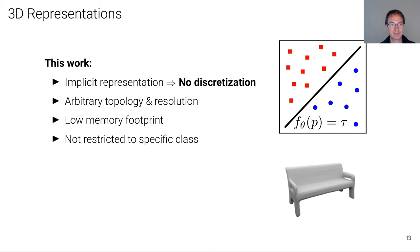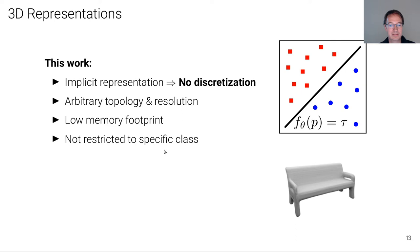In this work, we were wondering: is it actually really necessary to discretize space, as in all three aforementioned representations? What we do instead of using an explicit output representation is propose an implicit output representation that does not require any discretization. It can therefore model arbitrary topology and, in theory, an arbitrary resolution. It has a comparably low memory footprint and is not restricted to specific classes or categories for which templates are available.